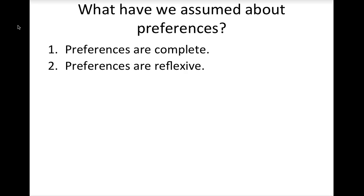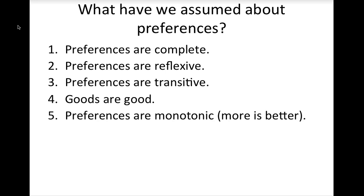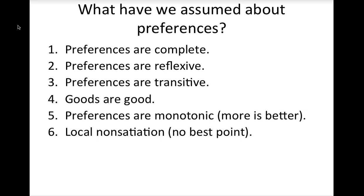Second, we assume that preferences are reflexive, which means that each bundle is at least as good as itself. Third, we assume that preferences are transitive. This assumption avoids circularity in consumer choices. Fourth, we assume that goods are good, and because they are good, a little more is always better, and there is no best point.